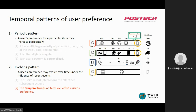Lastly, the temporary trends of items can affect the user's preference. For example, although user D does not have any behavior related to a smartphone, the user may buy one because of some related events such as sales promotions or advertisements. The events create the temporal trend of the item, and we can notice the trend via its popularity at that time.